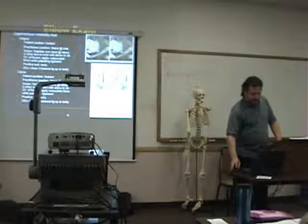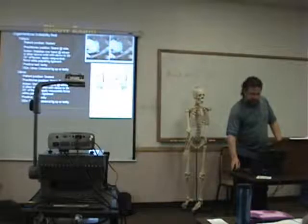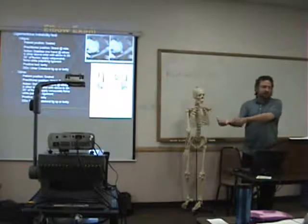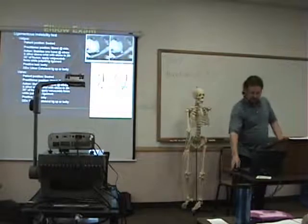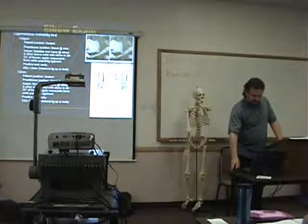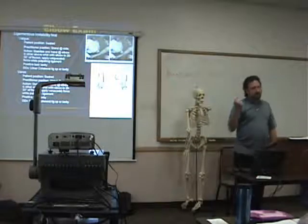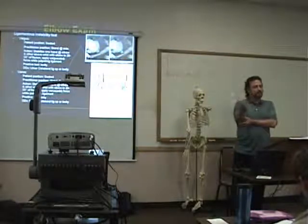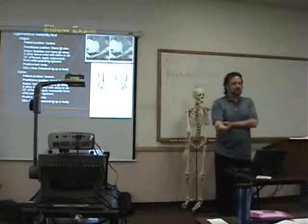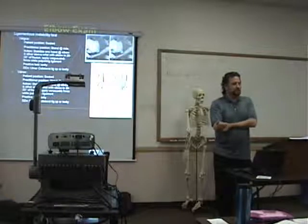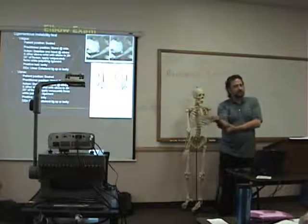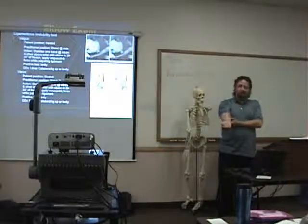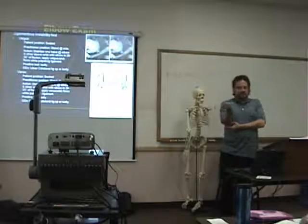Elbow ligament instability testing — you can have valgus and varus. Basically you're pushing it one way and pushing it the other way. Remember, as far as the ulnohumeral joint, the loose-pack position is a little bit more into flexion, so you can do the ligament instability test in that position, or you can also do it into full extension. There are different positions you can do it in.